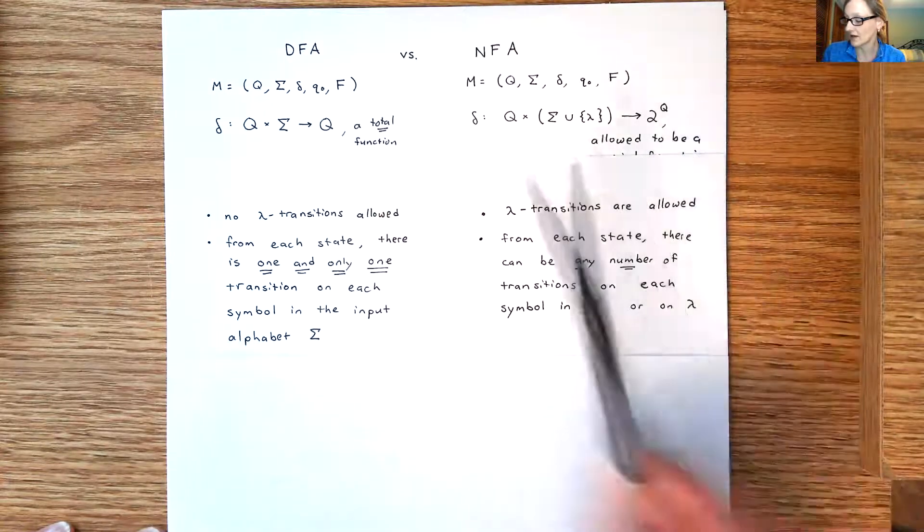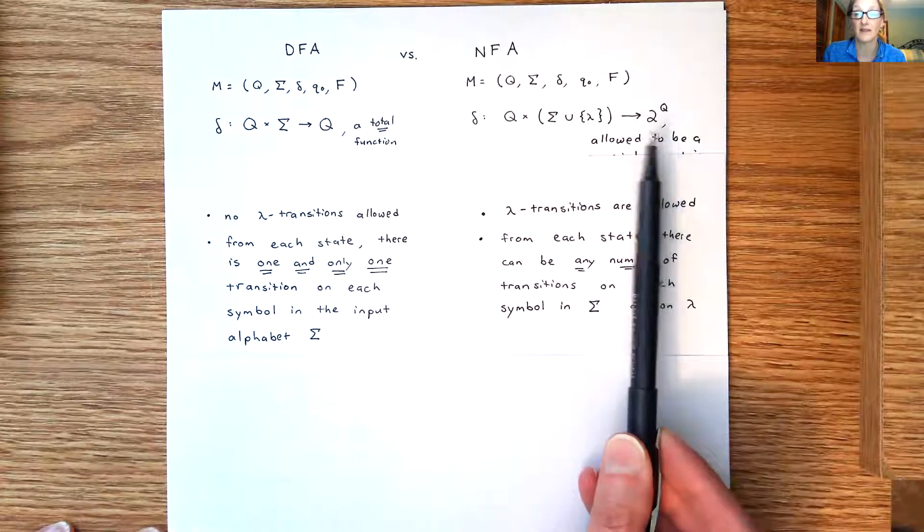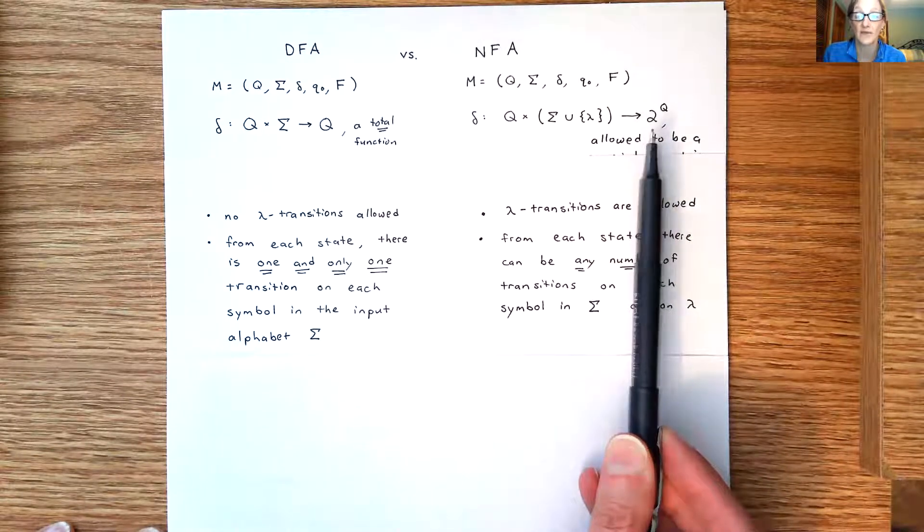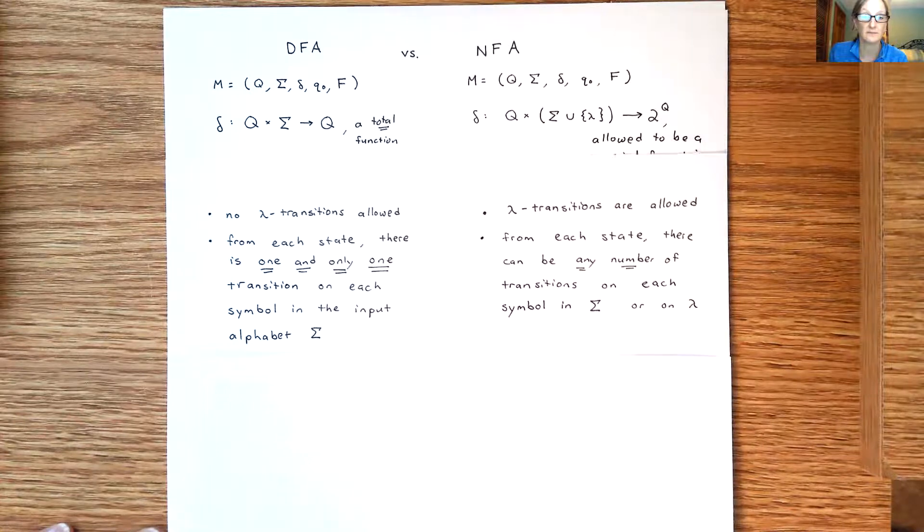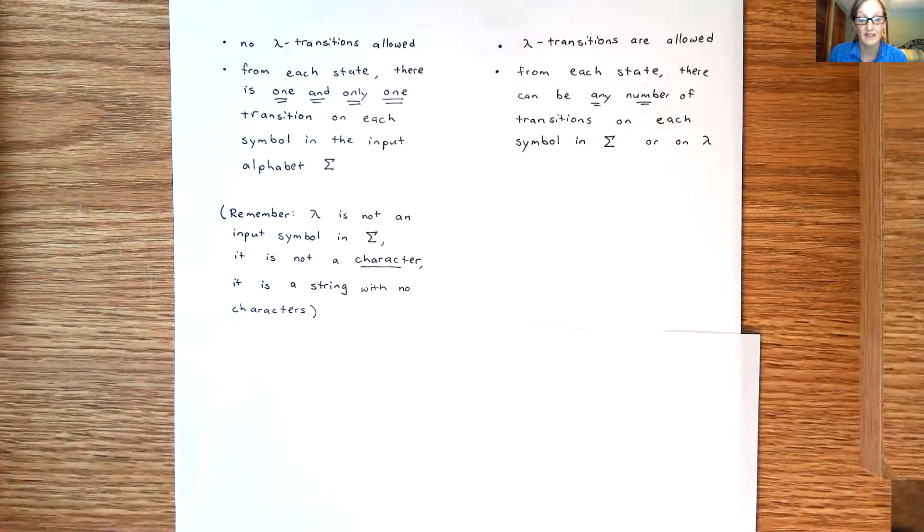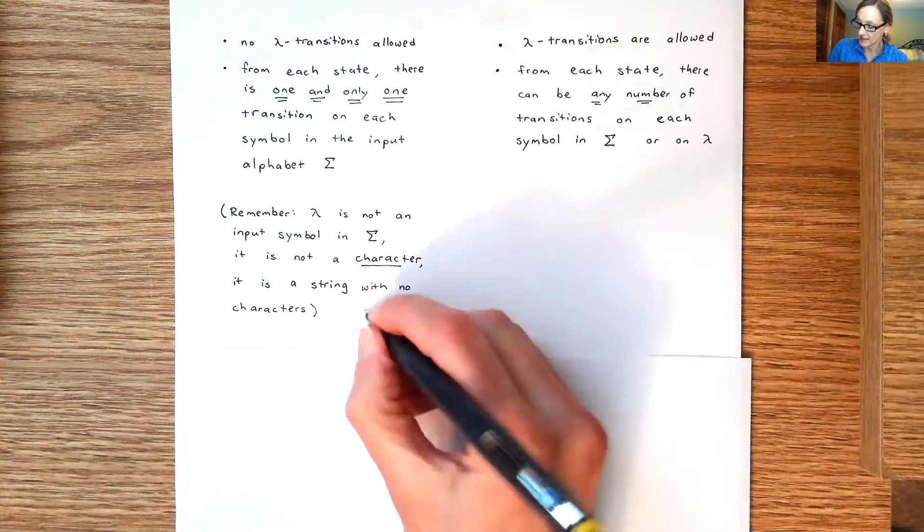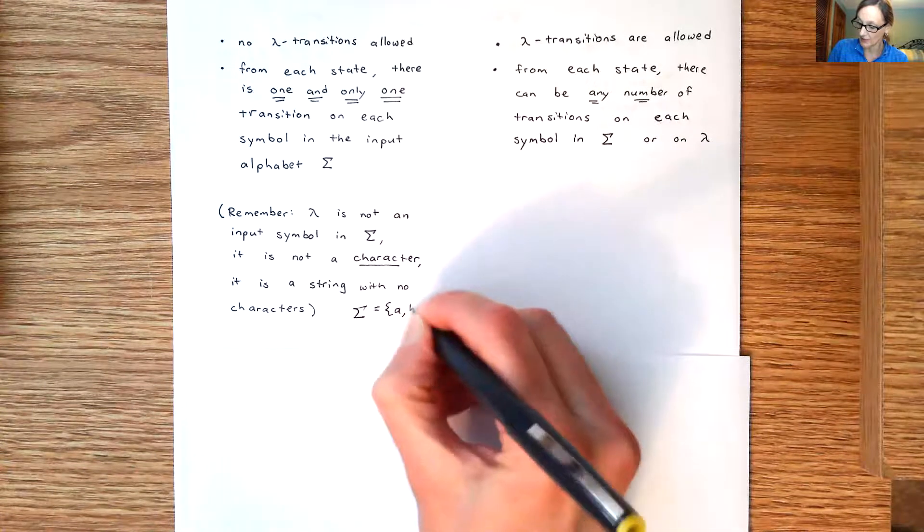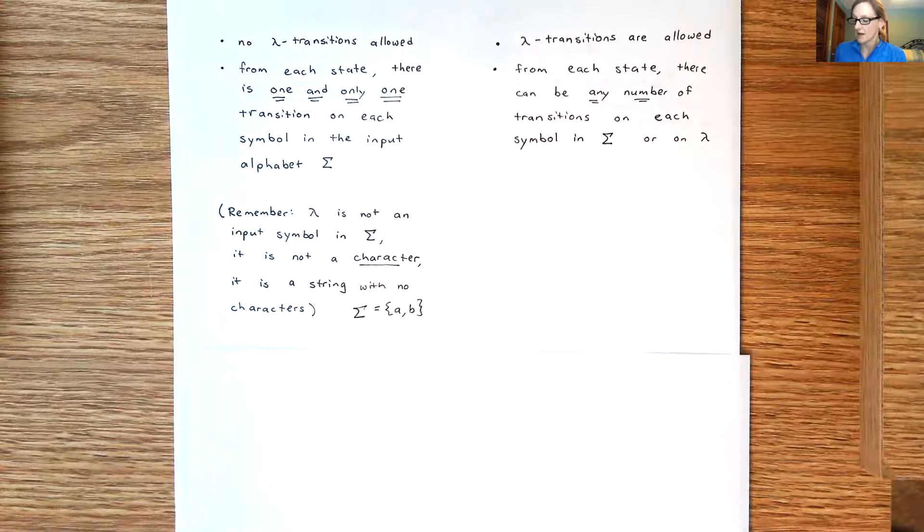Since we have the power set, this allows us to map some element, you know, an A or a B, it can go to any number, it can go to a set of states. It could go to zero or more, zero if it's an empty set, and then more if we happen to have two or three states in that set. And then the other thing I want to point out, the other really important observation is don't forget that lambda is not an input symbol. Lambda is never an input symbol, it's not a character, it's a string, it's the empty string, a string with no characters. So when you write out Sigma, Sigma is just the symbols like A or B. Lambda is never a part of Sigma, lambda is never in the input alphabet Sigma.